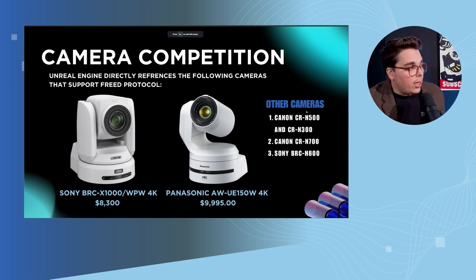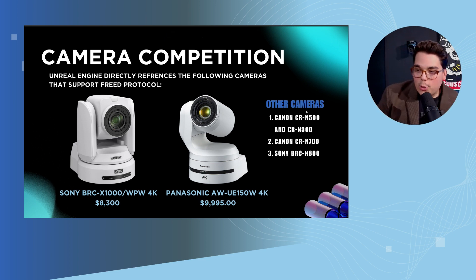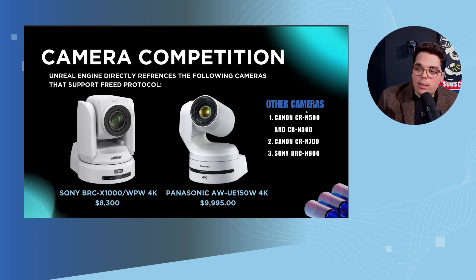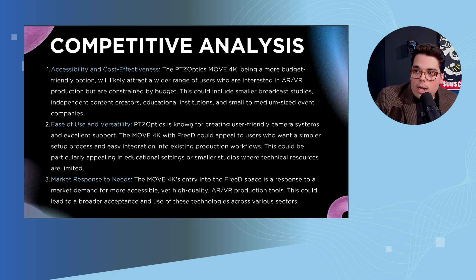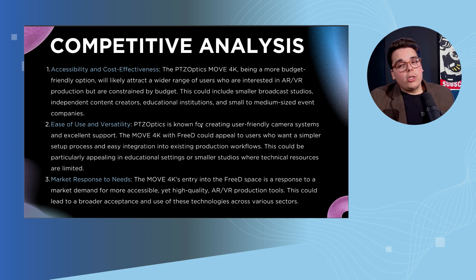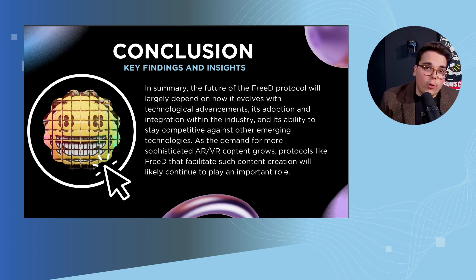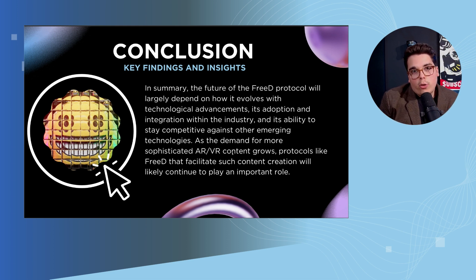Here's the big advantage: other cameras with this capability cost eight to ten thousand dollars. The Move 4K starts at eighteen hundred dollars. What we're seeing is 3D offered with a camera that is far more affordable and easier to obtain, letting you achieve really cool special effects at a much lower cost. We're going to stand out above the competition because of that price and because we're offering these tools. So look into 3D — it's a great tool for AR and VR, and it's now supported with the Move 4K once the new firmware comes out.